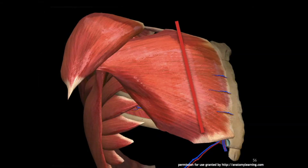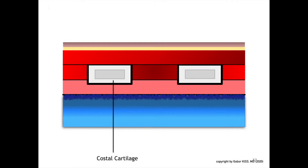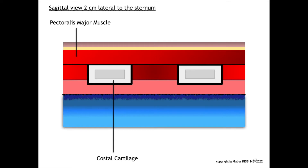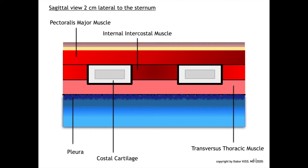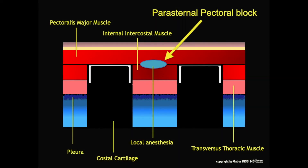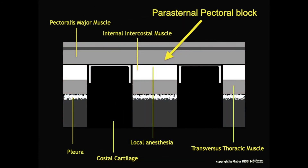Looking closer with a sagittal cross-section view at 2 cm lateral to the sternum, we see the following structures: the pectoralis major muscle, the internal intercostal muscle, and the transversus thoracic muscle with underneath the pleura. In order to perform a parasternal pectoral block, local anesthesia is injected between the pectoralis major muscle and the internal intercostal muscle, as shown on the slide. As a reminder, costal cartilage is displayed as a black shadow in ultrasound imaging. This cartoon of an ultrasound image of the same sagittal cross-section view shows local anesthesia injected between the pectoralis major and the internal intercostal muscle.